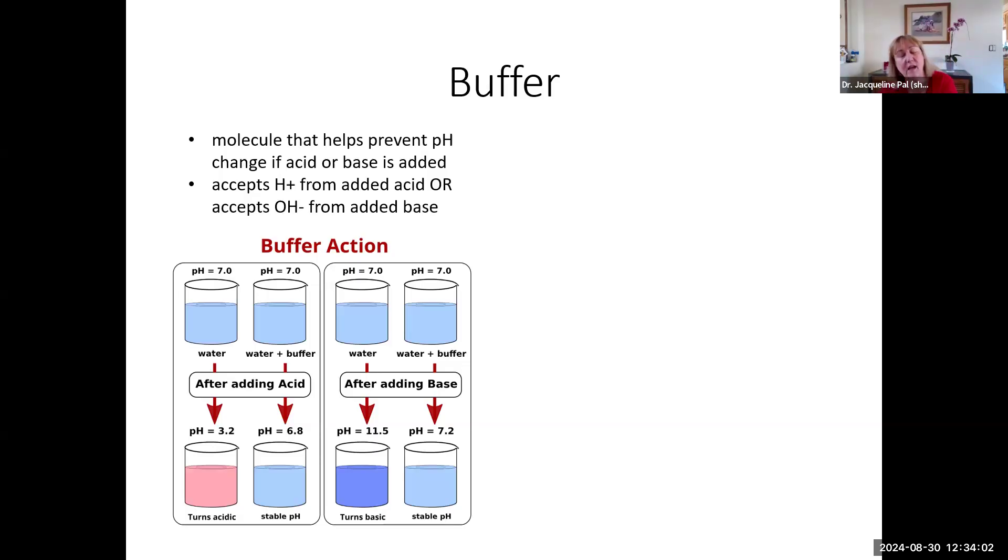Now, a pH of 6.8 is not normal for a human, but it could be for a different organism. Similarly, if we took the normal pH of seven and added a base, it could bring the pH up to 11.5. But adding a buffer to the water could only elevate that pH to 7.2 and thereby allow that organism to continue living.